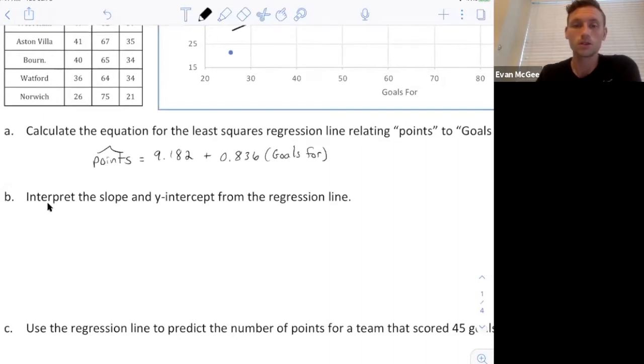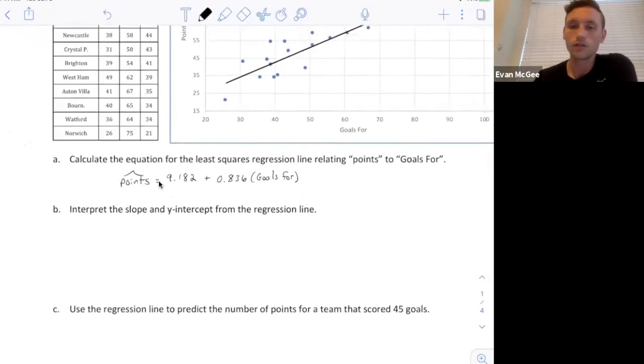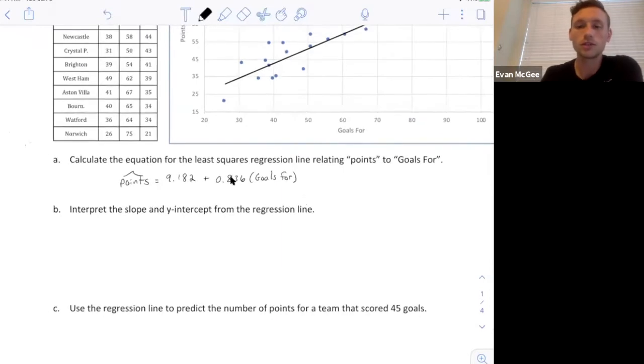Interpret the slope and the y-intercept from the regression line. The slope is always going to be for every additional increment of x. So, every additional goal, we expect the y-value, which is points, to increase, because it's positive, by 0.836 because that's the slope.